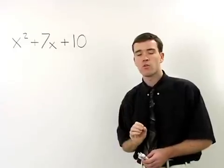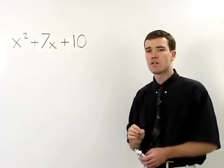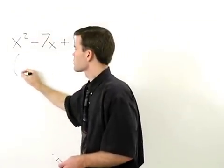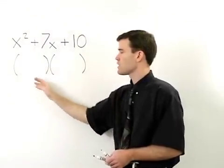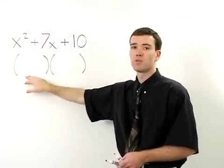When a trinomial is in this form, it can be factored as the product of two binomials. In other words, we'll set up two sets of parentheses, and within each set will be the two terms that compose each binomial.